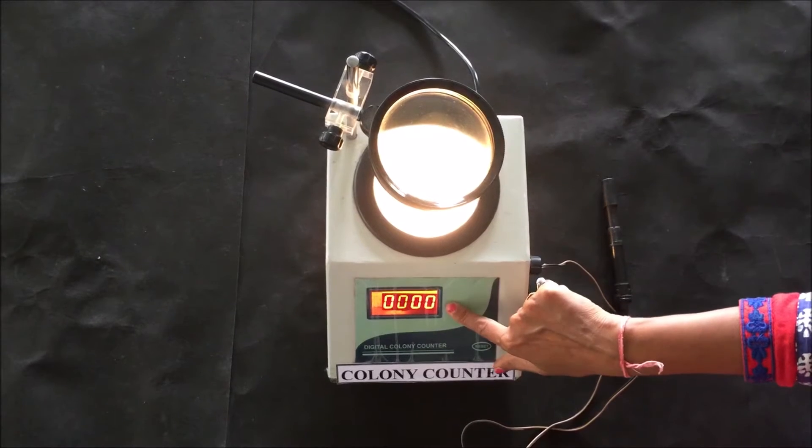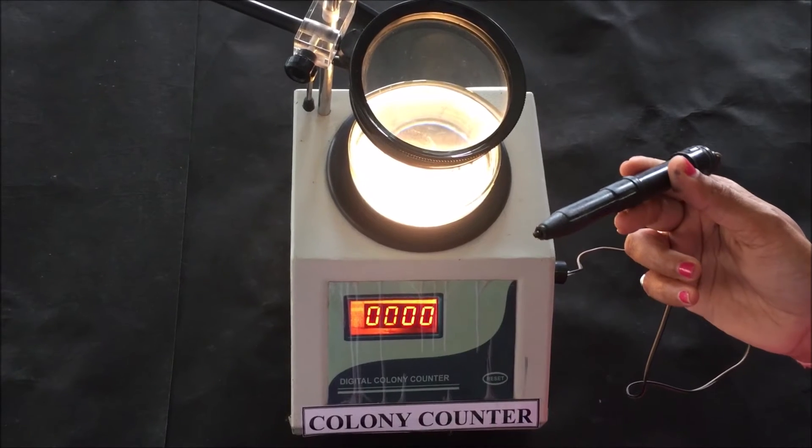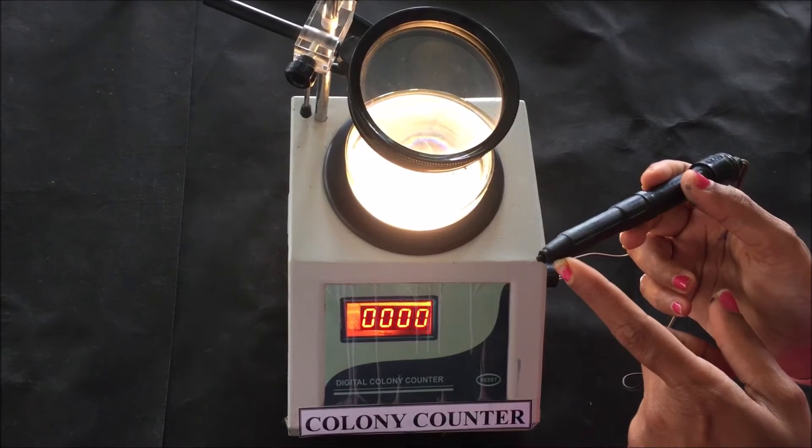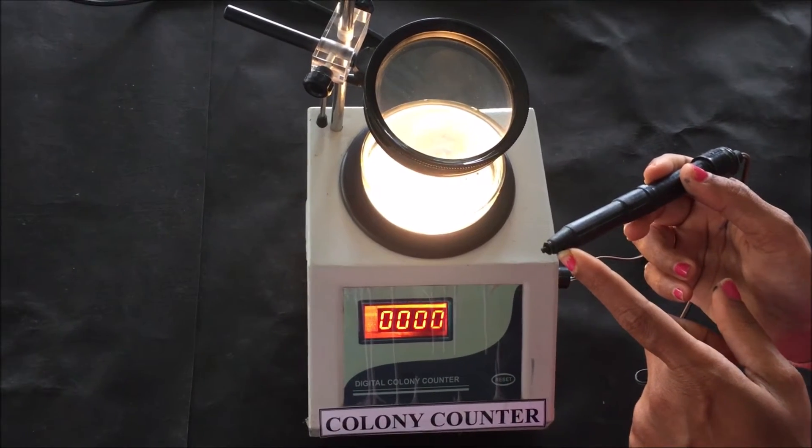This is the display for reading, and this is the marker pen which is connected to the instrument. This is the tip of the pen to mark the colonies on the petri dish at the time of counting.